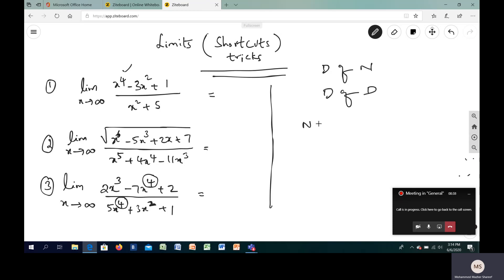If your numerator degree is greater than the denominator, the answer is going to be infinity. If the degree of numerator of the polynomial given is lesser than the denominator, it has to be zero.